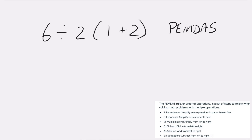In our problem, we have 1 plus 2, which is 3. So let's rewrite our equation: 6 divided by 2, open parentheses, 3, close parentheses.